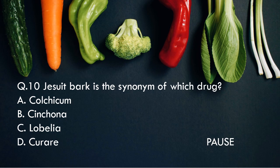Question 10: Jesuit Bark is the synonym of which drug? Option A, Colchicum. Option B, Cinchona. Option C, Lobelia. And option D, Curare. And the right answer is Cinchona. So Cinchona's synonym is Jesuit Bark.